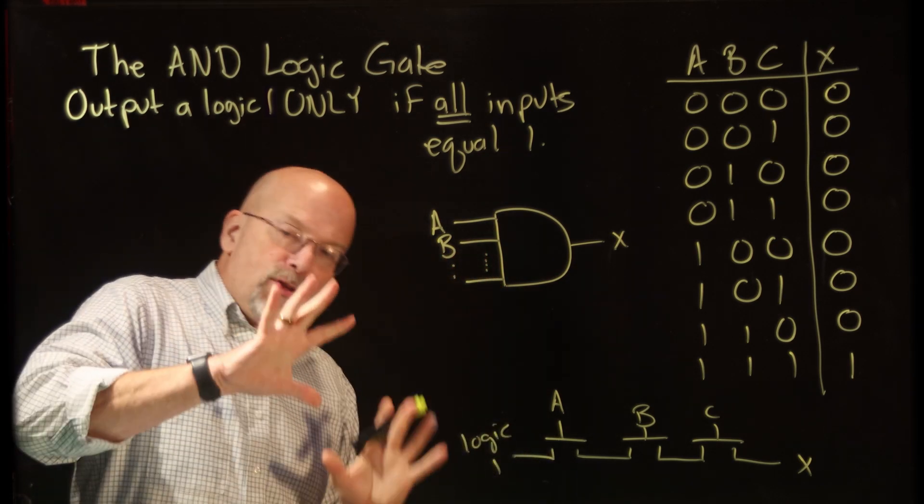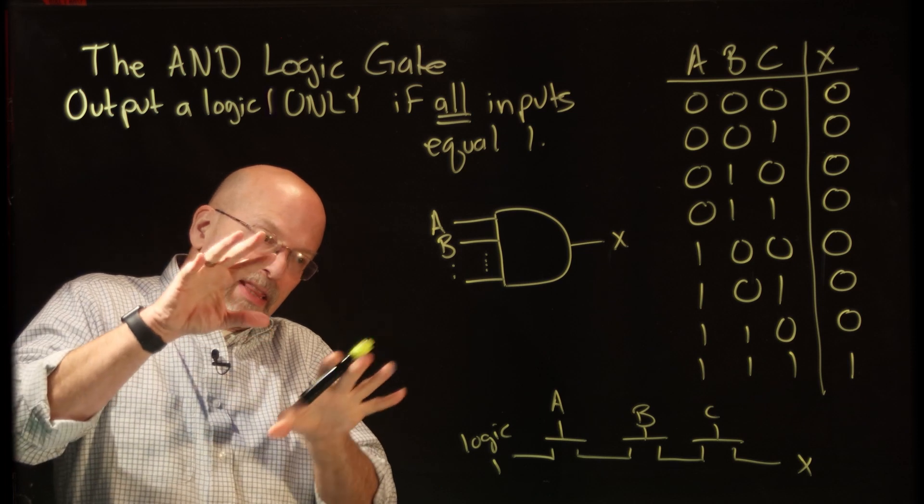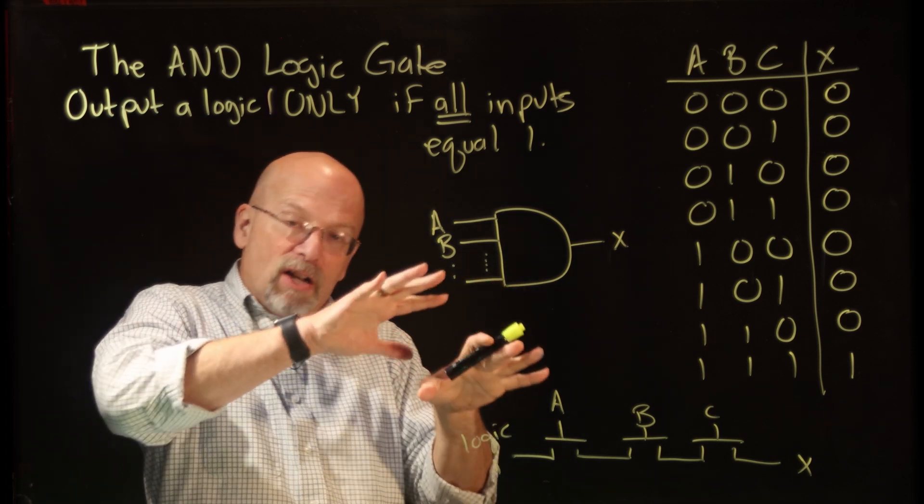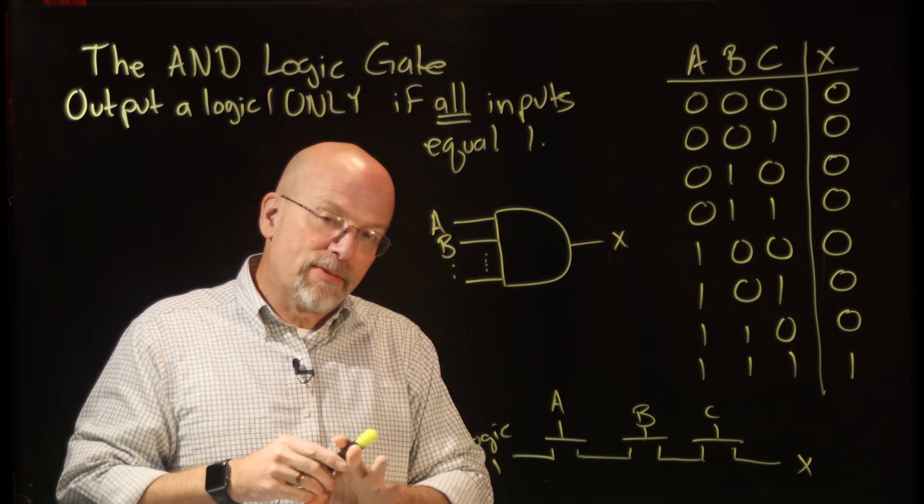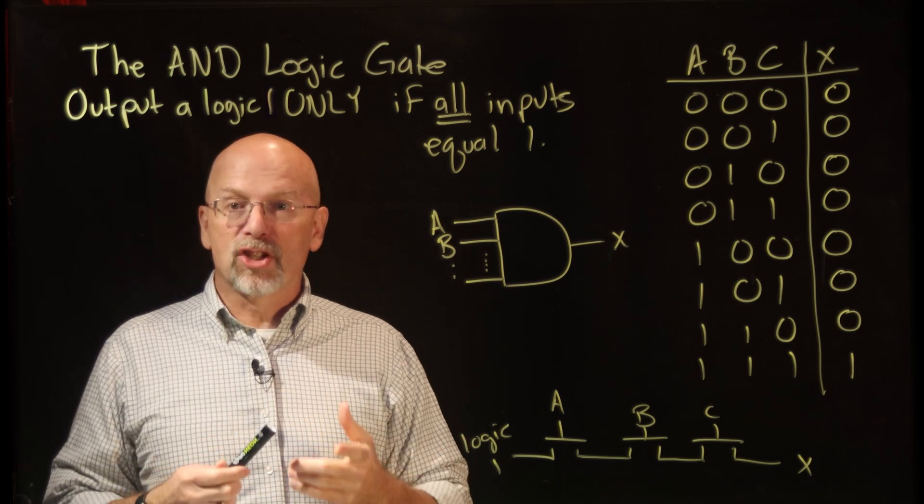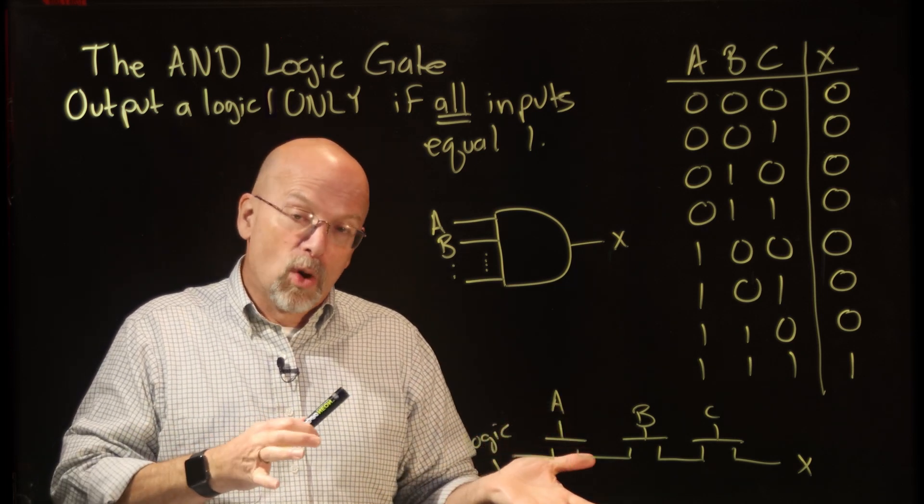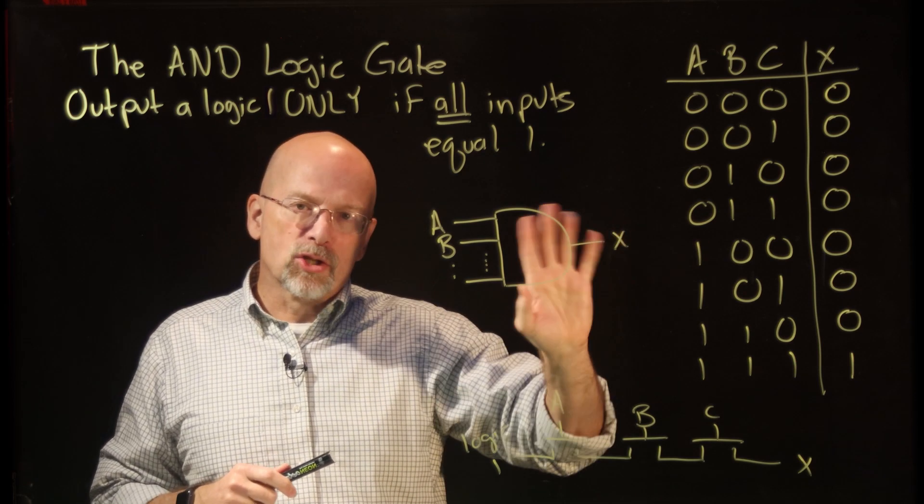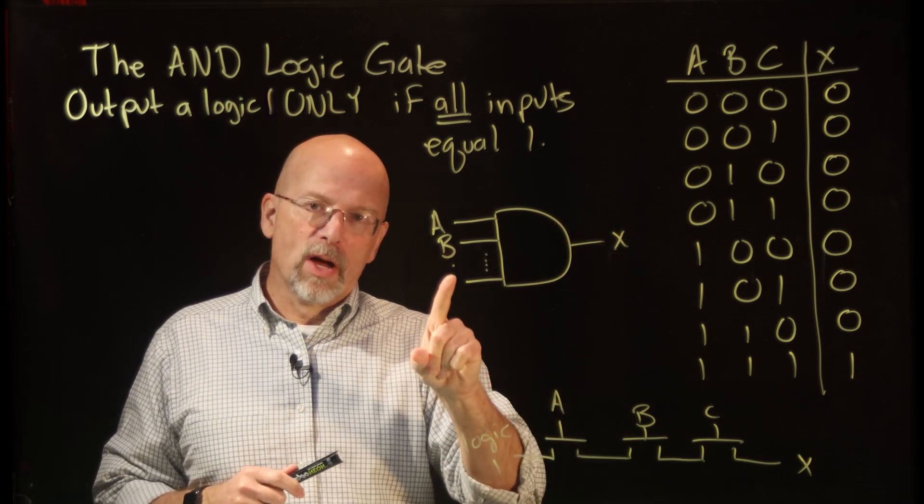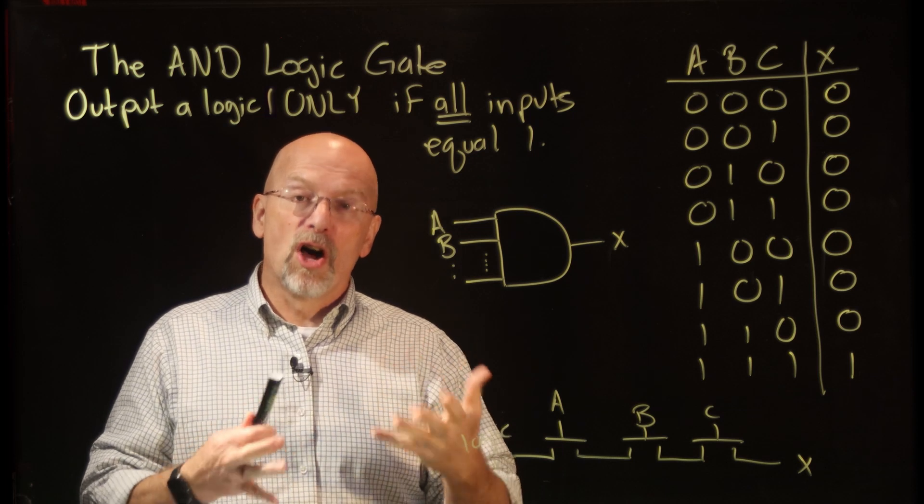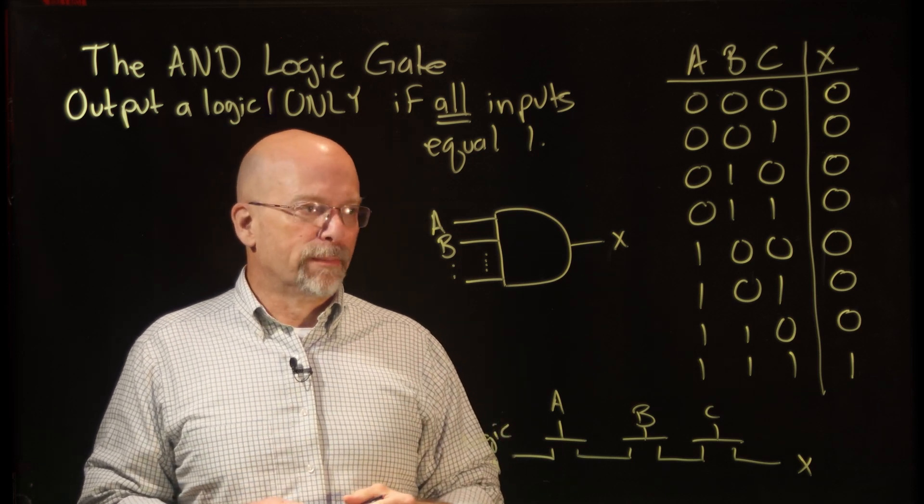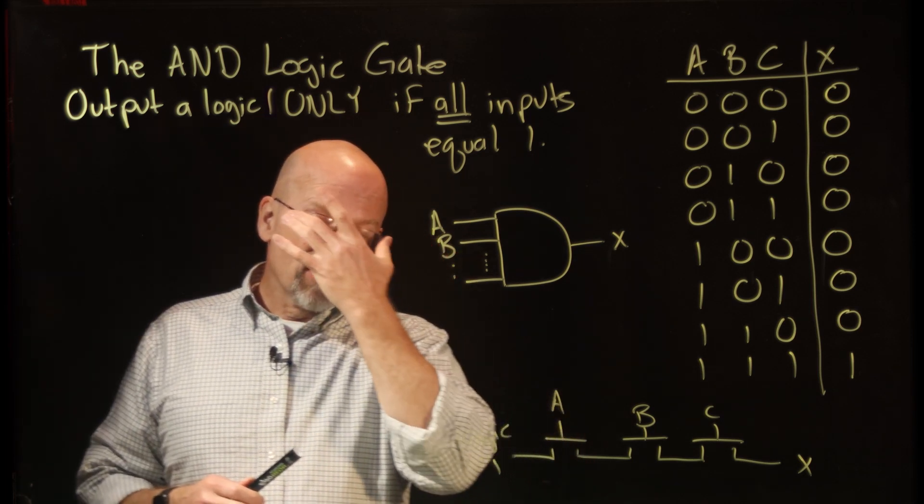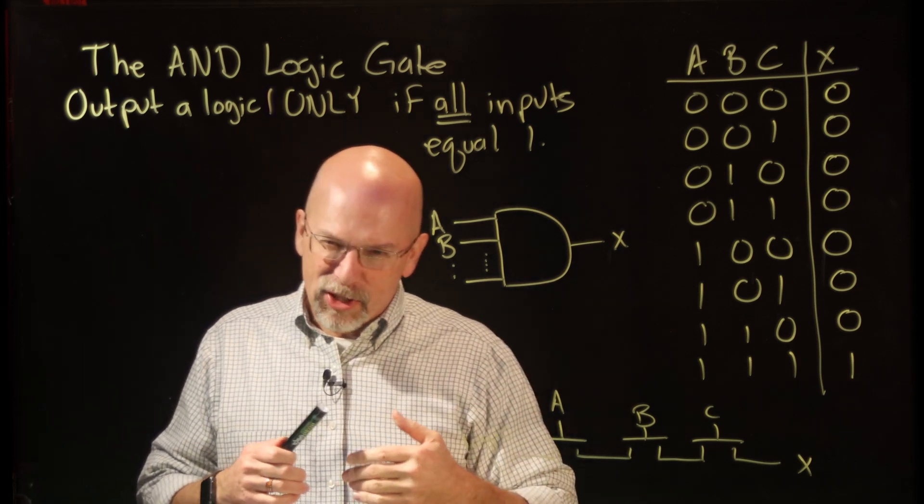So if you were to see this as a circuit, you'd see that A, B, C, all of these inputs would be coming in from the left-hand side. They would all have a logic value of zero or a logic 1. And the only way that this X is going to also be a logic 1 is if every single one of the inputs also is a logic 1.